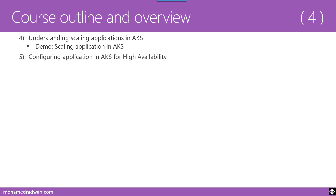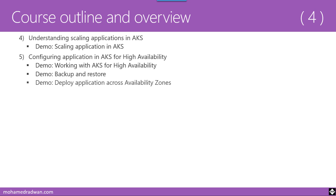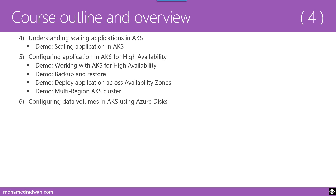Lesson Five of Module Four covers Configuring Applications in AKS for High Availability, with demos on implementing high availability, backup and restore for AKS, deploying applications across availability zones, and a multi-region AKS cluster. Lesson Six covers Configuring Data Volumes in AKS using Azure Disks, building on the Docker volumes knowledge from Module Two, with a demo on creating volumes and working with Azure Disks in AKS.